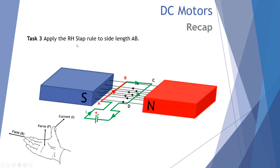Let's apply the right-hand slap rule to side length AB. I've labeled the corners of our coil A, B, C, and D. On length AB, we have current going into the page and a magnetic field moving to the left. Using our right-hand slap rule, we can predict that side length AB will experience a force up the page.